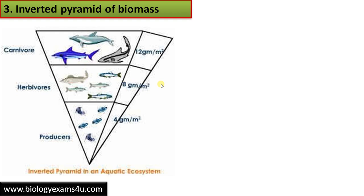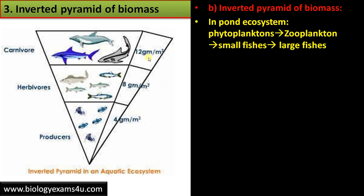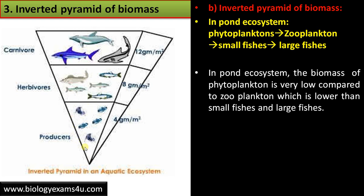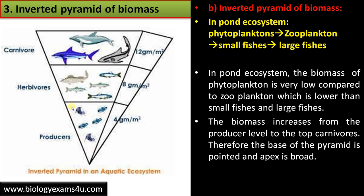The third example is the inverted pyramid of biomass. In a pond ecosystem, phytoplankton are of very low weight and form the producers. Zooplankton are also of low weight. As we move up, small fishes have more weight than producers, and large fishes have more dry weight than herbivores. So biomass increases up the trophic levels, forming a pointed base and broad apex — an inverted pyramid of biomass.